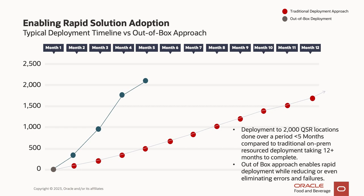A real-world example of a deployment we've carried out this year: we deployed Symfony to over 2,000 quick-service restaurant locations in under five months — traditionally this would have taken a minimum of 12 months. This enabled the customer to realize the benefits of Symfony across their estate far quicker than would have previously been possible. Our team is happy to meet with you to have a more in-depth discussion on our pre-staging solutions, Cloud Assist, and depot hardware spares. If anything we've talked about today is of interest, please reach out to your account team or consulting team. Thank you.